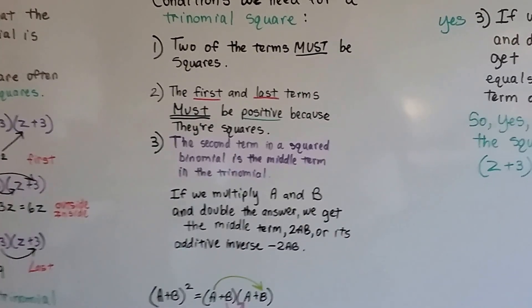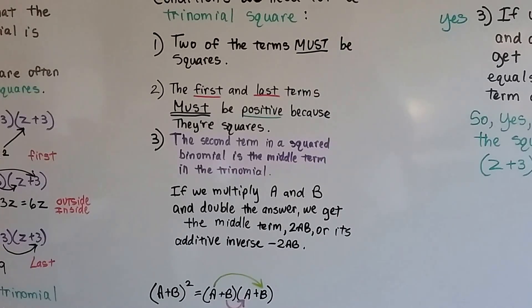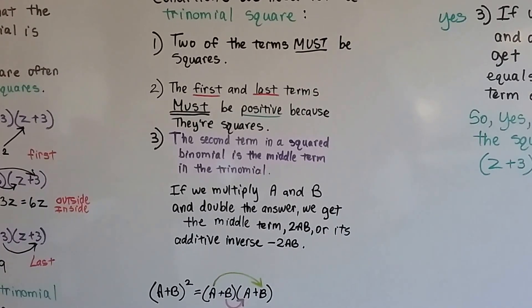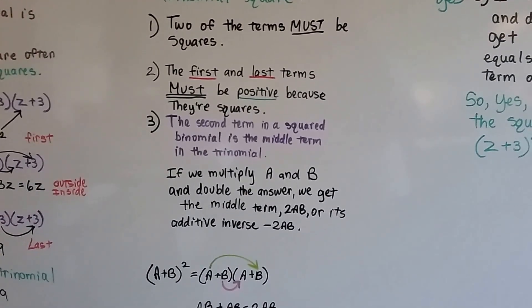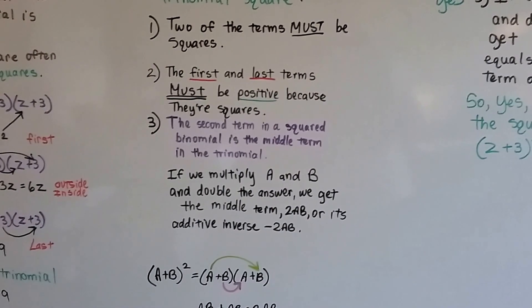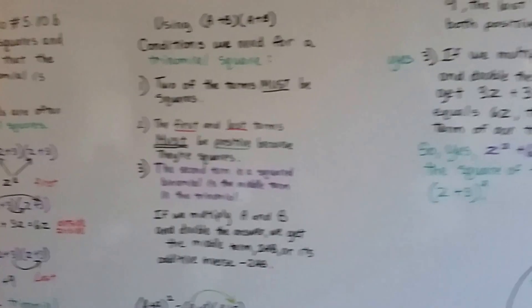One, two of the terms must be squares. Two, the first and last terms must be positive. And three, if you multiply a and b and double the answer, you'll get the middle term of the trinomial square.